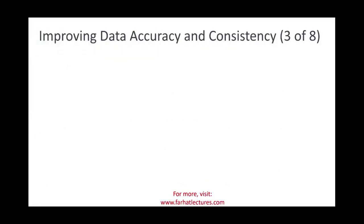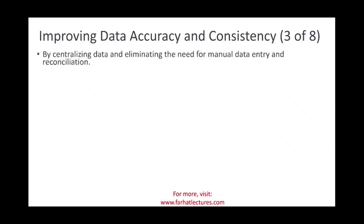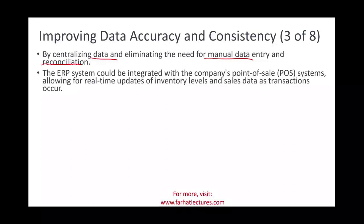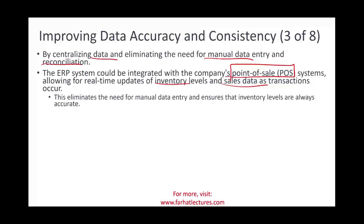Third benefit: improving data accuracy and consistency. By centralizing all data and eliminating manual data entry — where mistakes happen — and reducing the need for reconciliation, ERP integrated with a point-of-sale system allows real-time updates of inventory, knowing exactly inventory levels and sales data as transactions are conducted, eliminating manual entry and ensuring inventory levels are always accurate and up to date.